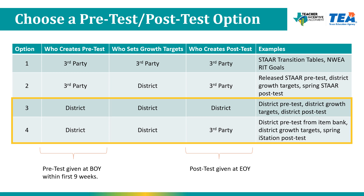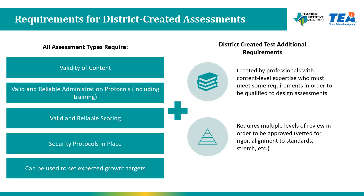This presentation will cover pre-test post-test creation. You will hear references to Option 3 or Option 4 from the pre-test post-test tab of the application. Regardless of the option chosen, the student growth measure must have validity of content, valid and reliable administration protocols, valid and reliable scoring protocols, and the ability to set expected growth targets. Option 3 focuses on the district-created pre-test and post-test with district-created growth targets. District-created assessments also require strong content expertise to design the assessment and multiple levels of review to ensure validity and reliability.